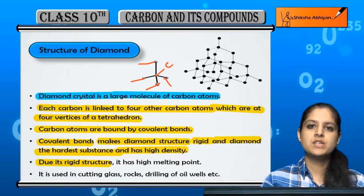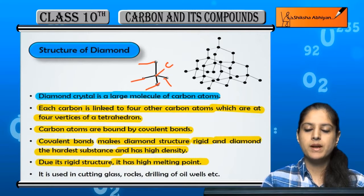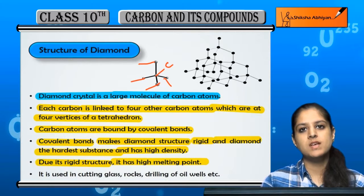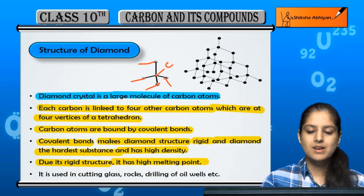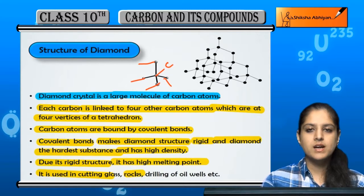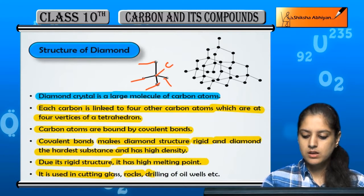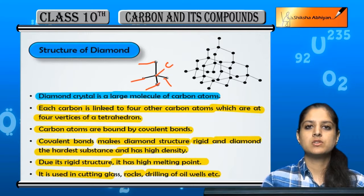Because of this rigid structure, the melting point of diamond is also very high. Therefore, diamond can be used for glass cutting, rock cutting, and drilling of oil wells.